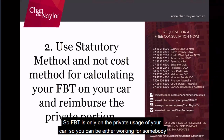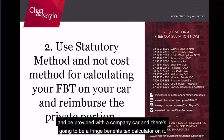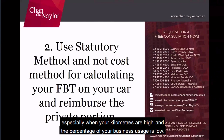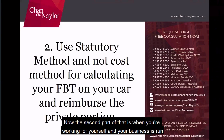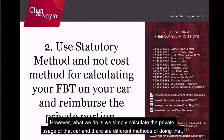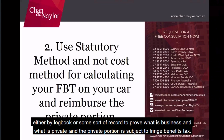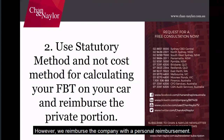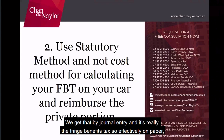You can be working for somebody and be provided a company car, with fringe benefits tax calculated on it. Most companies now use the statutory method, especially when kilometres are high and the percentage of business usage is low. When you're working for yourself and your business is run through a trust or company that provides you a car, you're also required to lodge a fringe benefits tax return. What we do is calculate the private usage of the car — either by a logbook or some record — and we reimburse the company with a personal reimbursement by journal entry, which gets rid of the fringe benefits tax liability.